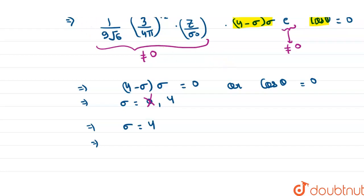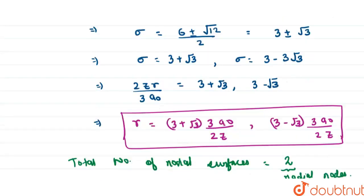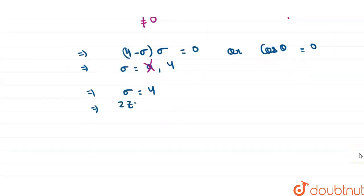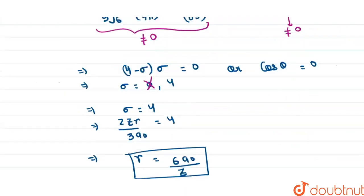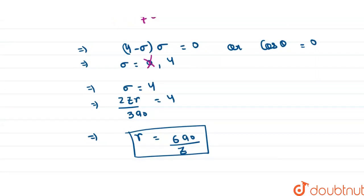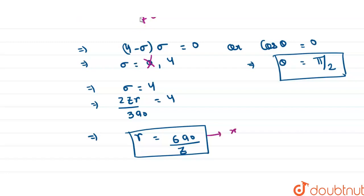Since sigma equals 2Zr upon 3a₀, setting 2Zr upon 3a₀ equal to 4 gives r equal to 6a₀ upon Z. This is the radial node. For the angular node, cos theta equals 0 implies theta equals pi by 2. So the 3pz orbital has two nodes: one radial node at r equals 6a₀/Z and one angular node at theta equals pi/2.